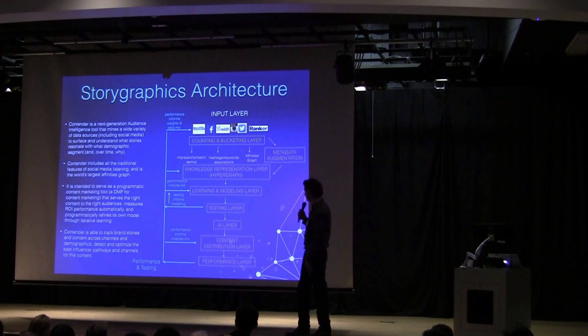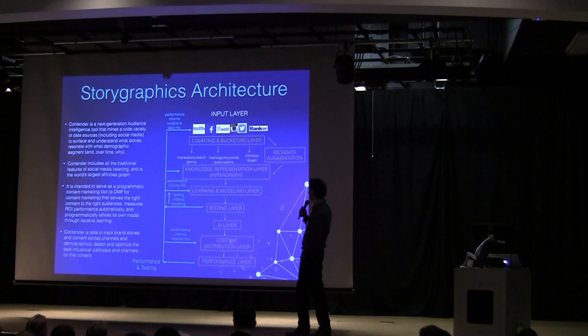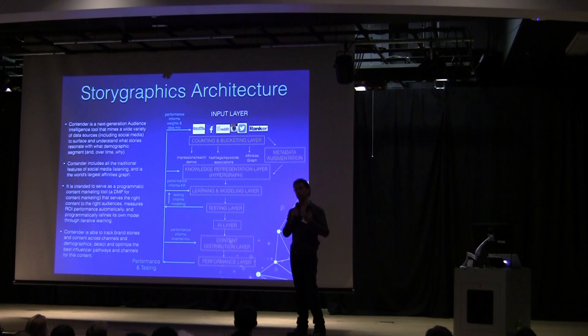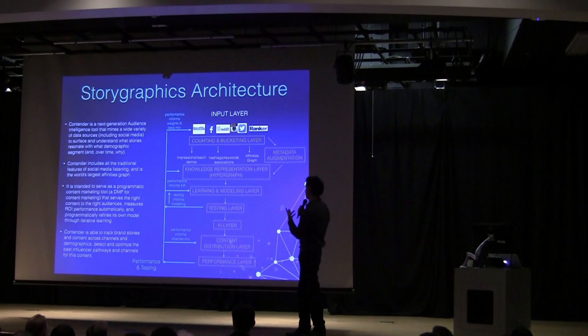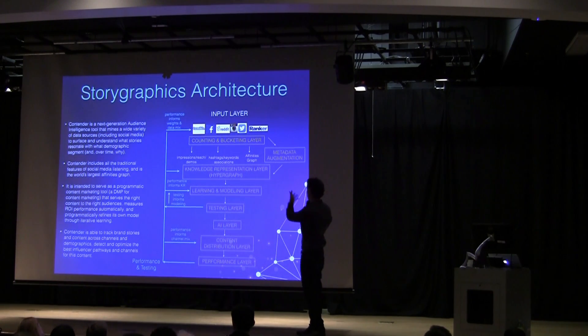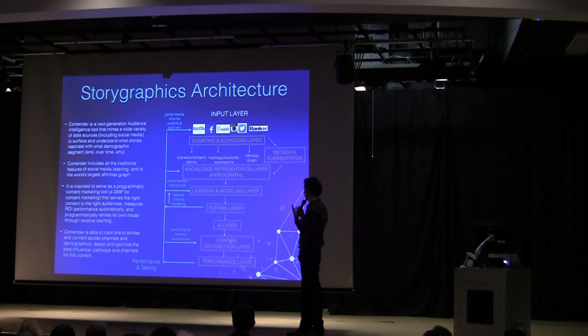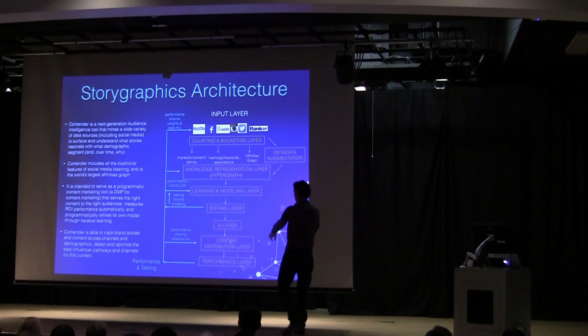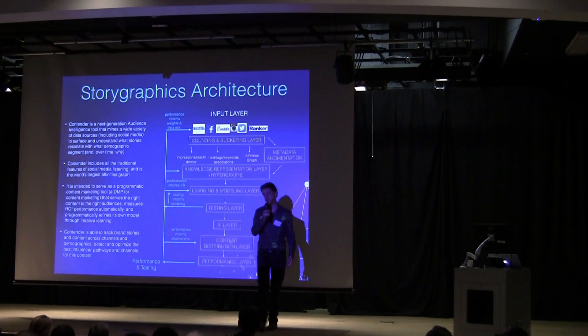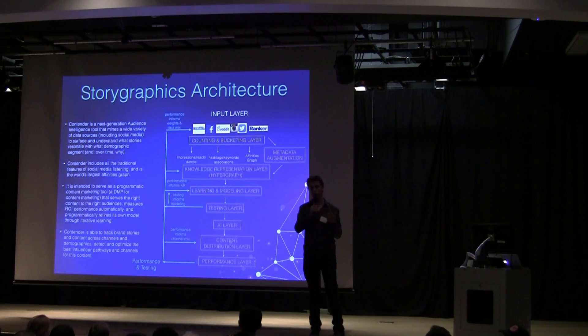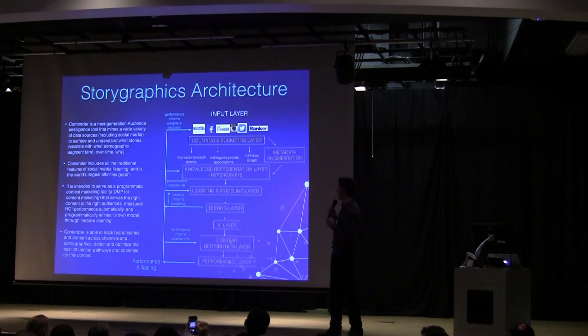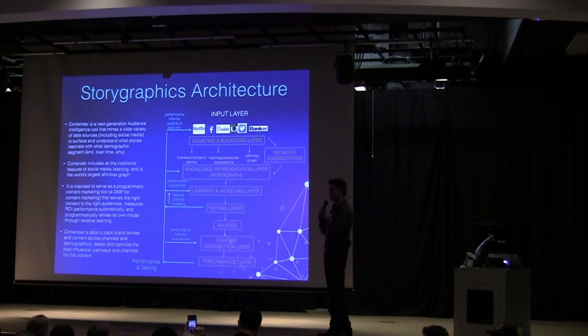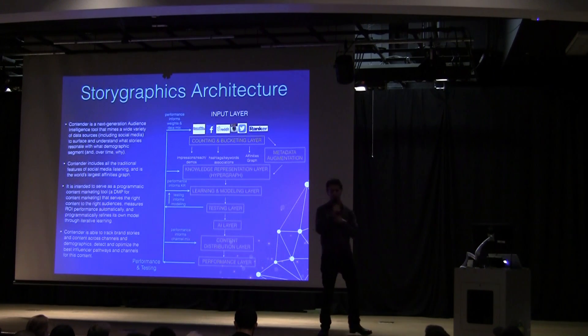So this is a platform that we're building called Contender for a big ad agency. And what Contender does is that it adds several layers of intelligence on top of traditional social media listening metrics and capabilities. We're using, we're putting a lot of thoughts in knowledge representation. We're putting a lot of thoughts in metadata augmentation, and we're building a lot more intelligence through it and also we're making it accountable through performance testing. So all the models are tested and then the performance results are plugged into the model. I'm happy to give you more details about this, but it's the first time in my knowledge that true AI framework is being applied to audience intelligence and audience segmentation.